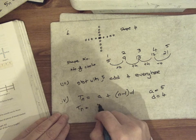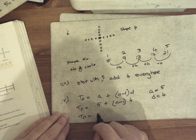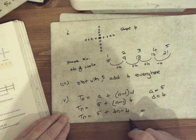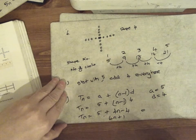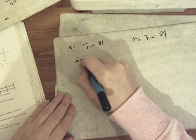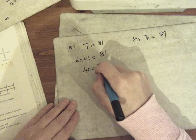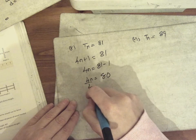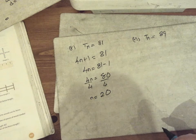For finding Tn: A is the first term, which is 5. D is the common difference, which is 4. So Tn equals 5 plus (n minus 1) times 4. That gives Tn equals 5 plus 4n minus 4, which simplifies to 4n plus 1. Then they said when does Tn equal 81? So 4n plus 1 equals 81. Move the plus 1 over: 4n equals 80. Divide each side by 4, and n equals 20. So term number 20 will have 81 circles.